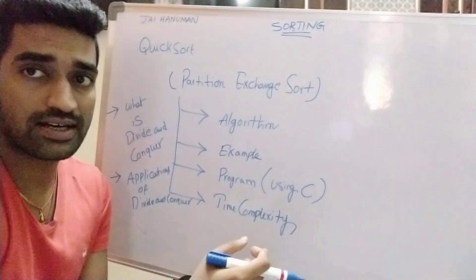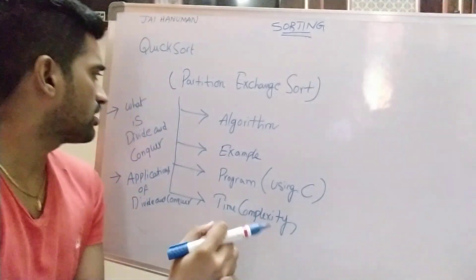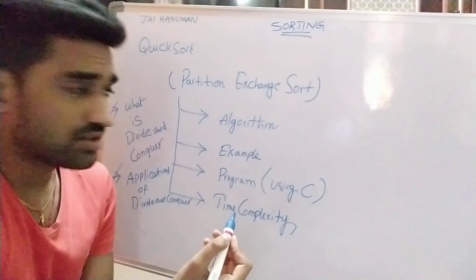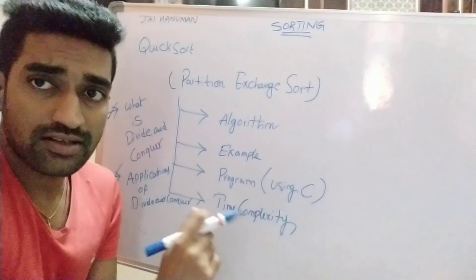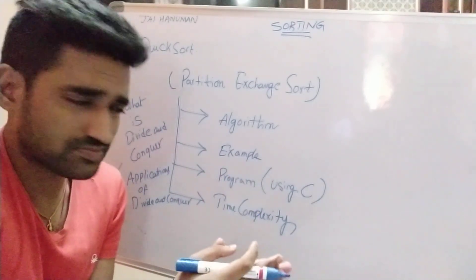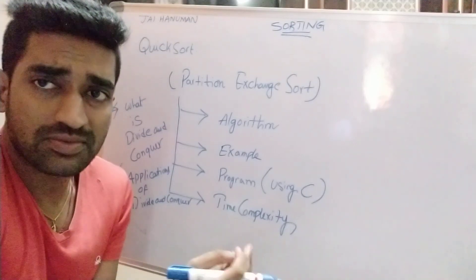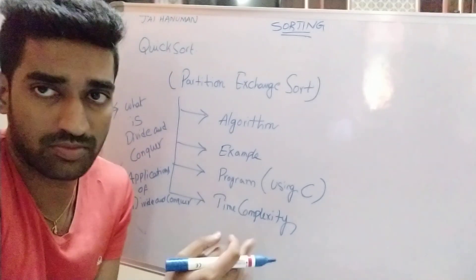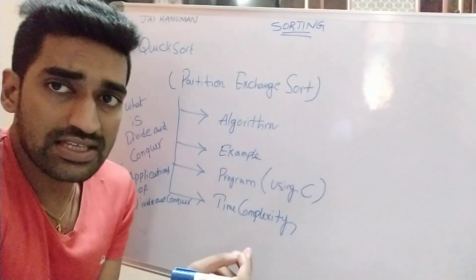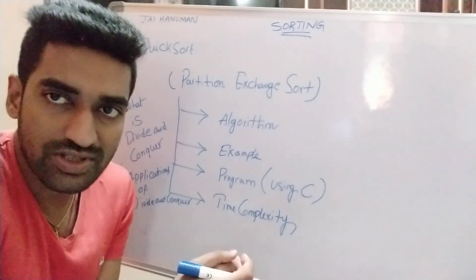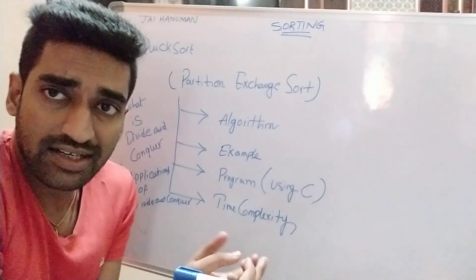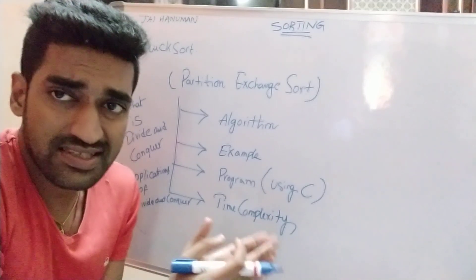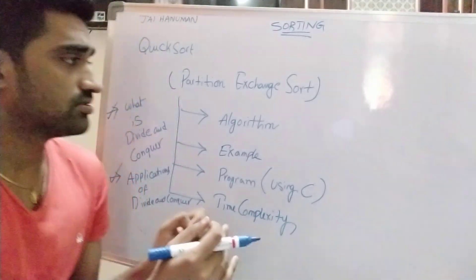Before entering into this algorithm, we need to understand what divide and conquer technique is and what its applications are. In computer science, for solving any big problem, the entire problem is first divided into several sub-problems. We then solve each sub-problem independently and combine all the sub-solutions to get the original solution to the given problem.